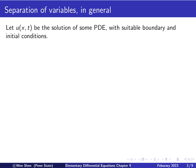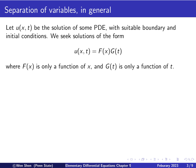In this video we will derive a general solution for this equation using the method called separation of variables. It's a more general method and can be used for many other equations. So let u as a function of xt be the solution of some PDE in one space dimension and time-dependent, with suitable boundary and initial conditions. We seek solutions of the specific form where u(x,t) can be written as a product of two functions: f, which depends only on x, and g, which depends only on t.